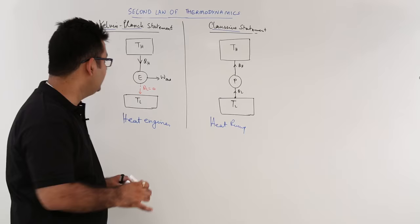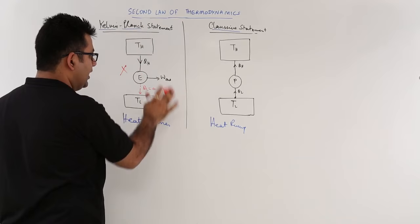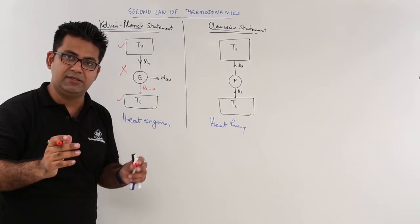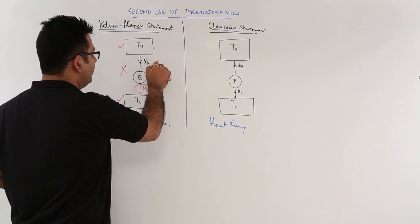The Kelvin-Planck statement says that you cannot have a heat engine operating between two temperature limits with no heat rejection. That is, you cannot have 100% efficiency. This is not possible at all.